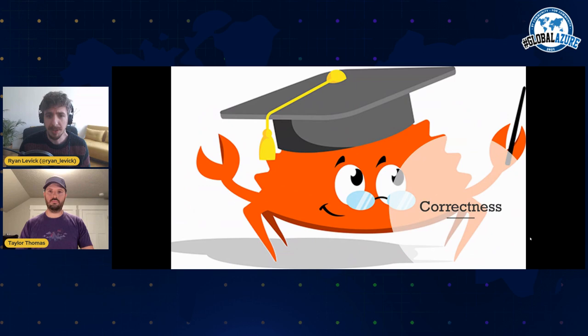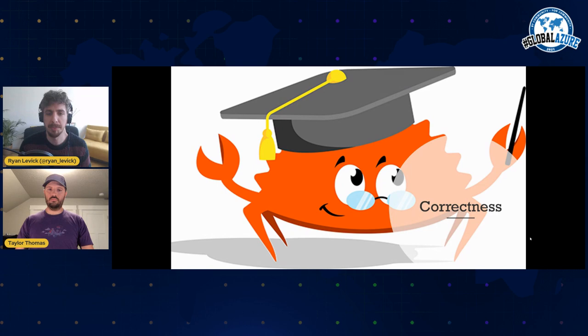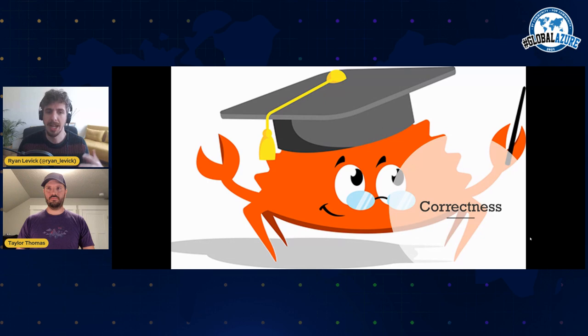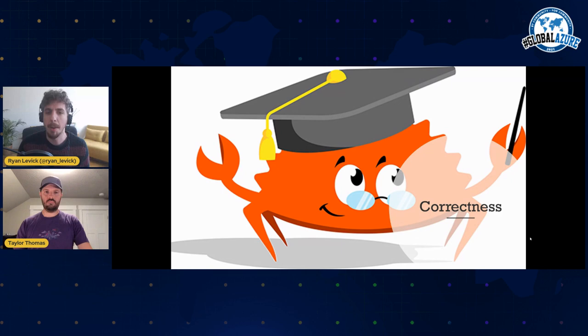On top of that, and related to memory safety, is the idea of correctness. When we use Rust, we get a lot of features in the language to make sure that the programs we're writing are correct and don't have bugs. Now, it's totally possible to write bugs in Rust — Taylor and I have both written our fair share. But one thing that's hard to quantify is that when you write Rust code, you tend to write code that is less buggy than in other languages, including languages with garbage collectors like C# or Java.